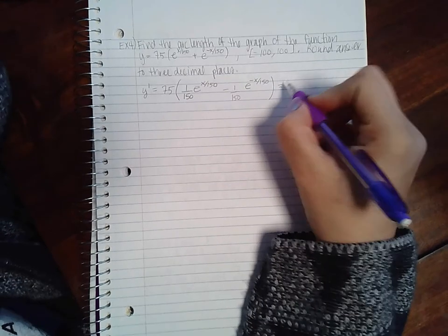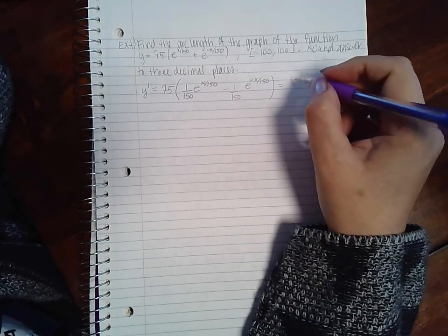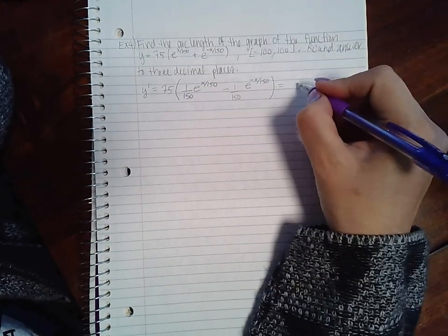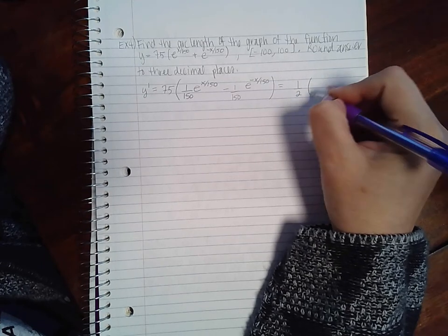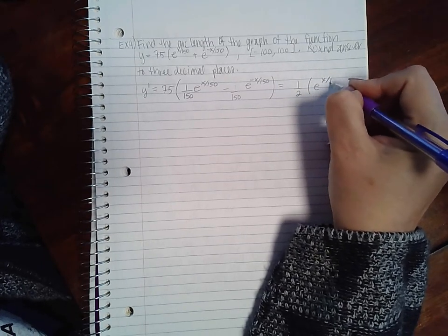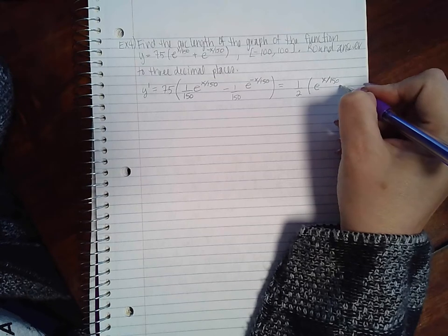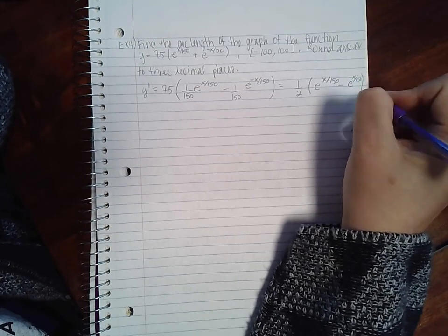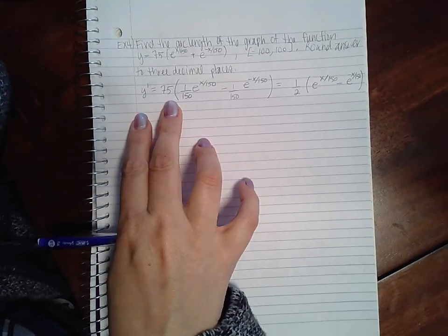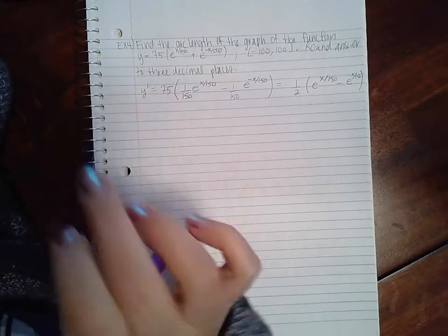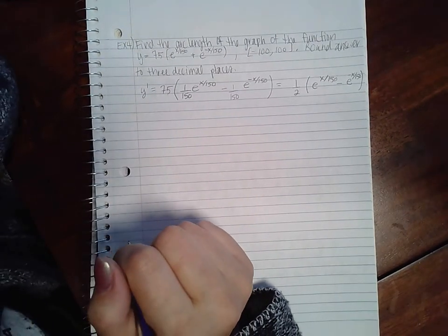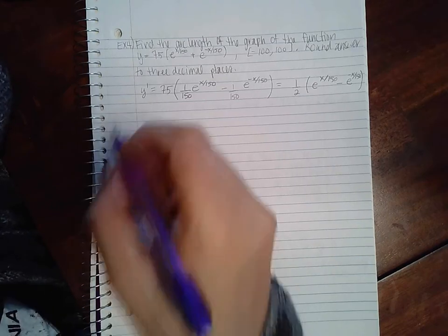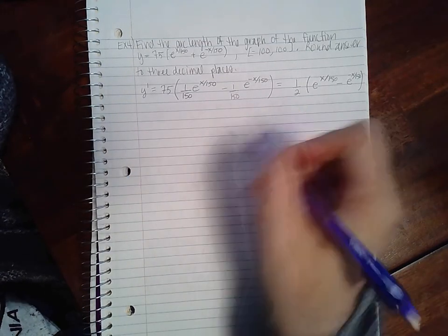So if I reduce this I end up with, that's actually half. So I end up with 1 half e to the x over 150 minus e to the negative x over 150. I just factored out the 1 over 150 and reduced 75 over 150, which reduces to 1 half.